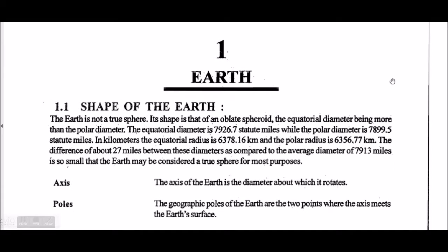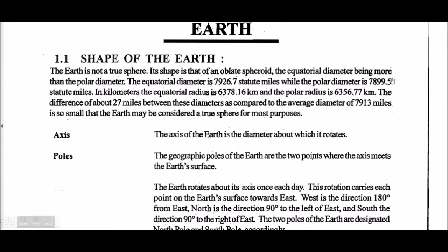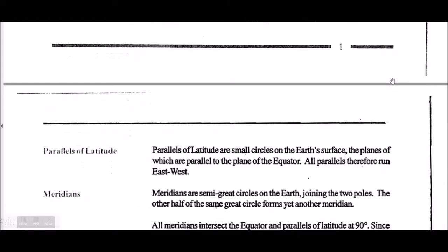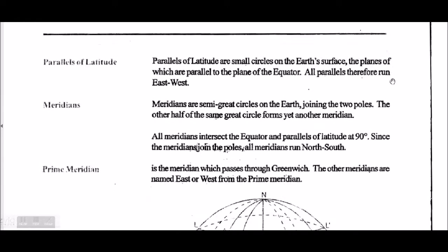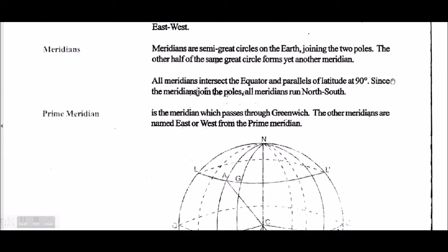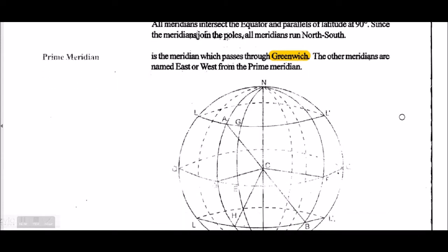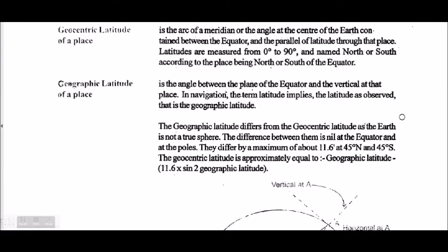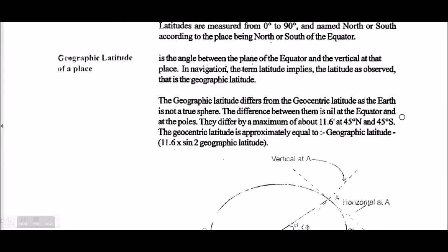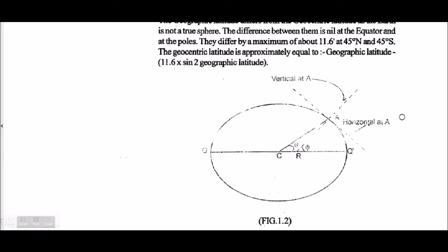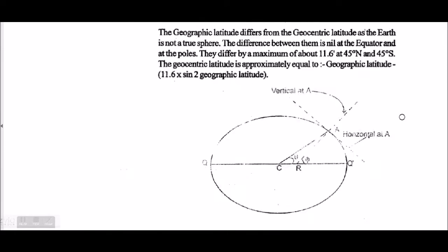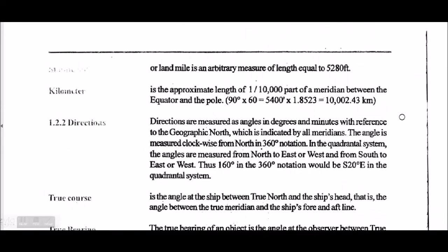In navigation, we have to learn about the shape of the earth, axis, poles — these things people already know. Then meridian, prime meridian, which is also known as Greenwich. The meridian which passes through Greenwich, and east or west of the other meridians are named accordingly. Then latitude, definition of latitude, longitude — not too much, just the basics.